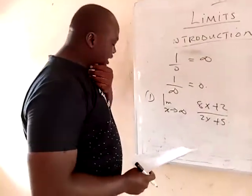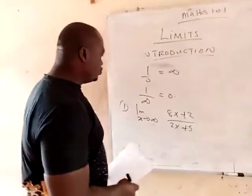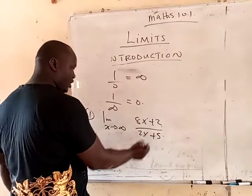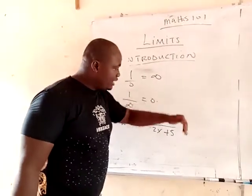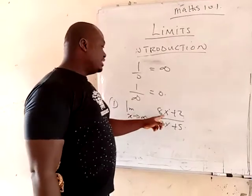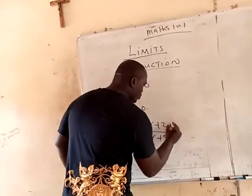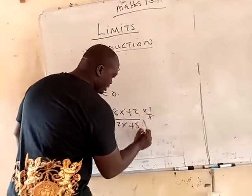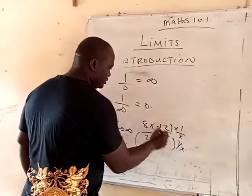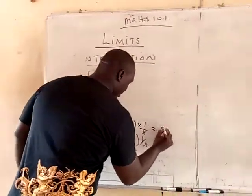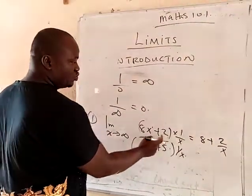The first thing you're going to do is: you can see that we have x and we involve infinity. So what I'm going to do is — the highest power of x here is 1. I'm going to divide the top and the bottom by x raised to the power of 1. Dividing gives 1 over x for each term. Times this through: you have 8 plus 2 over x. Remember, x will cancel x.